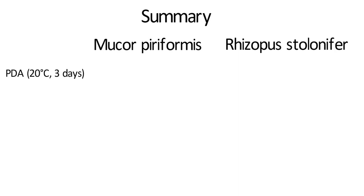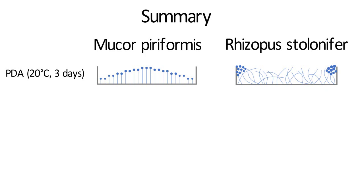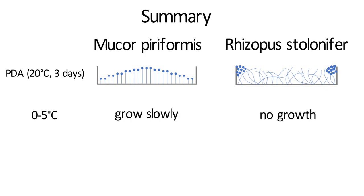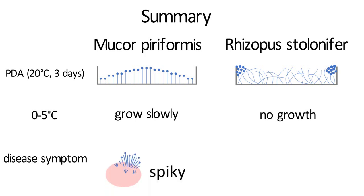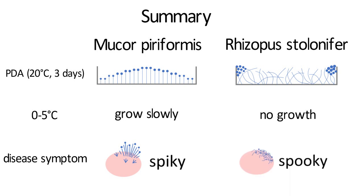Here is a summary. On PDA media, Mucor piliformis develops a raised colony and produces sporangia as they grow towards the edge of the plate. Rhizopus stolonifer develops mycelia that go everywhere inside the media, and its sporangia are found mainly on the edge of the plate. At 0 to 5 degrees Celsius, Mucor piliformis can grow slowly, but Rhizopus cannot grow at all. Disease symptom of Mucor piliformis looks spiky, while that of Rhizopus stolonifer looks spooky. If it's spiky, that's Mucor piliformis, and if it's spooky, that's Rhizopus stolonifer.